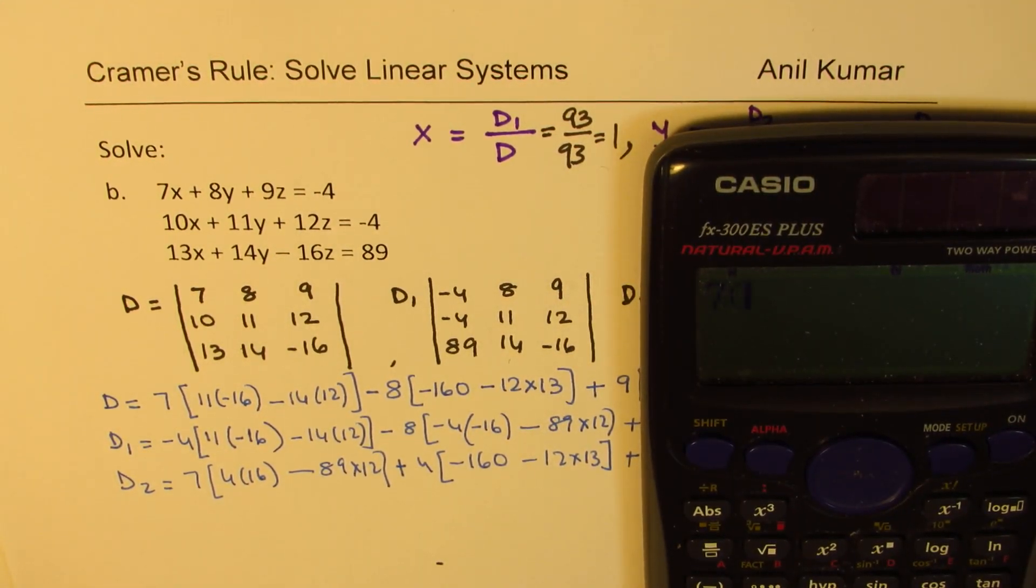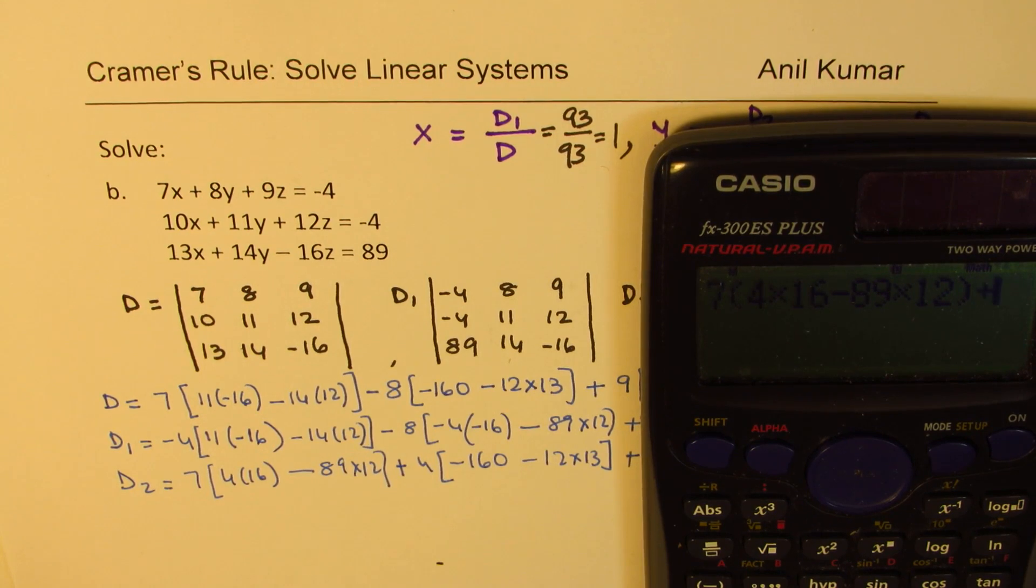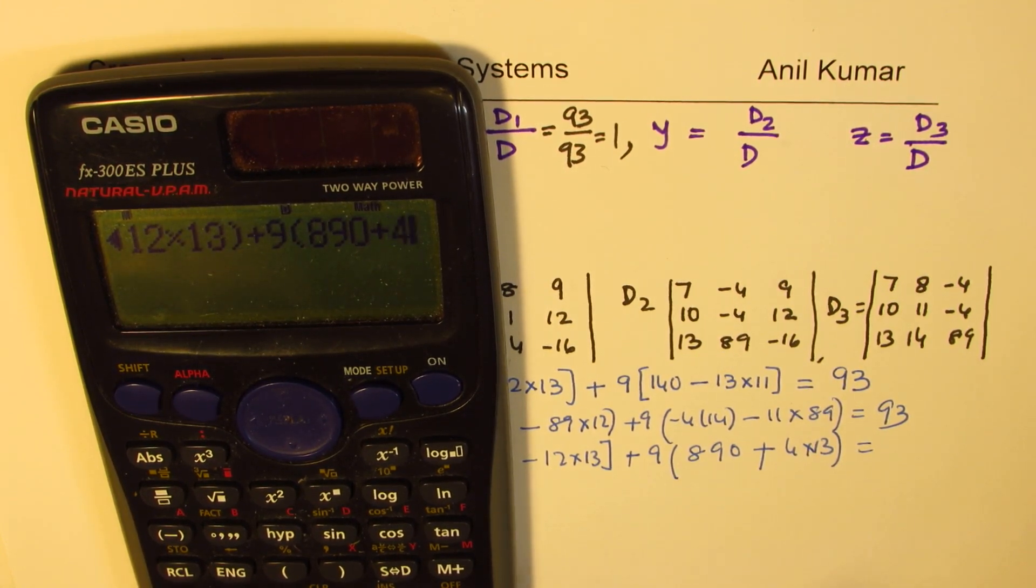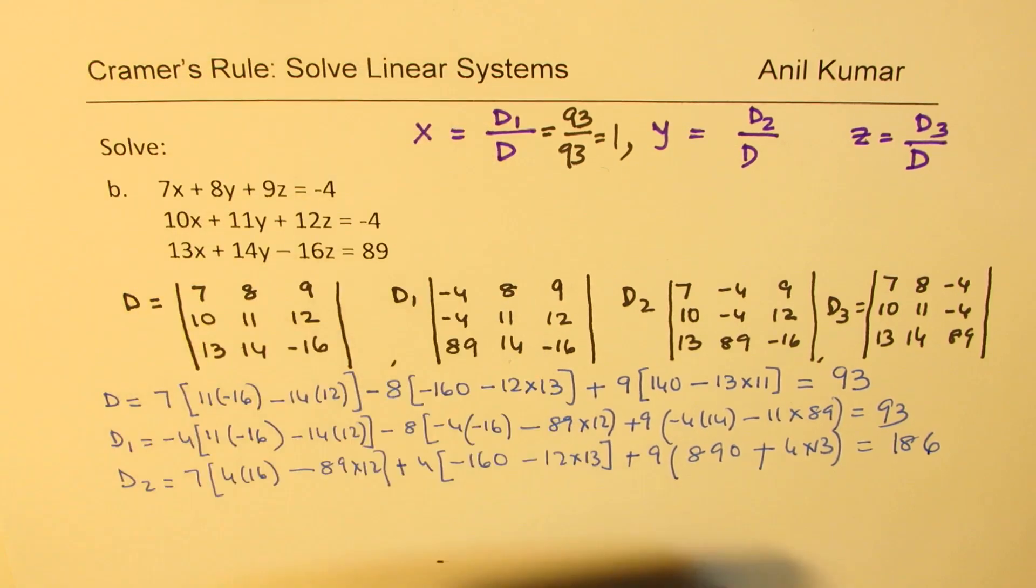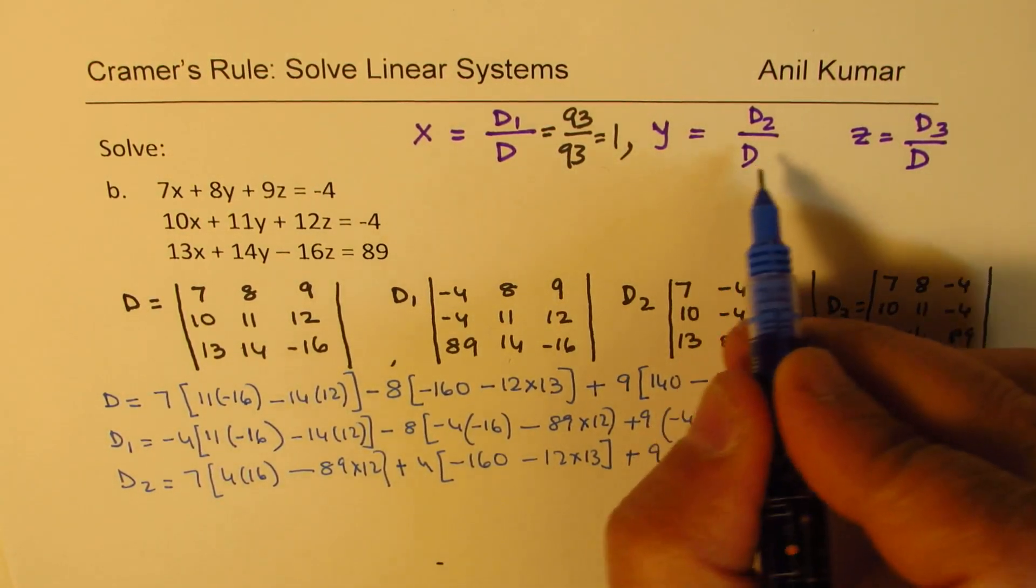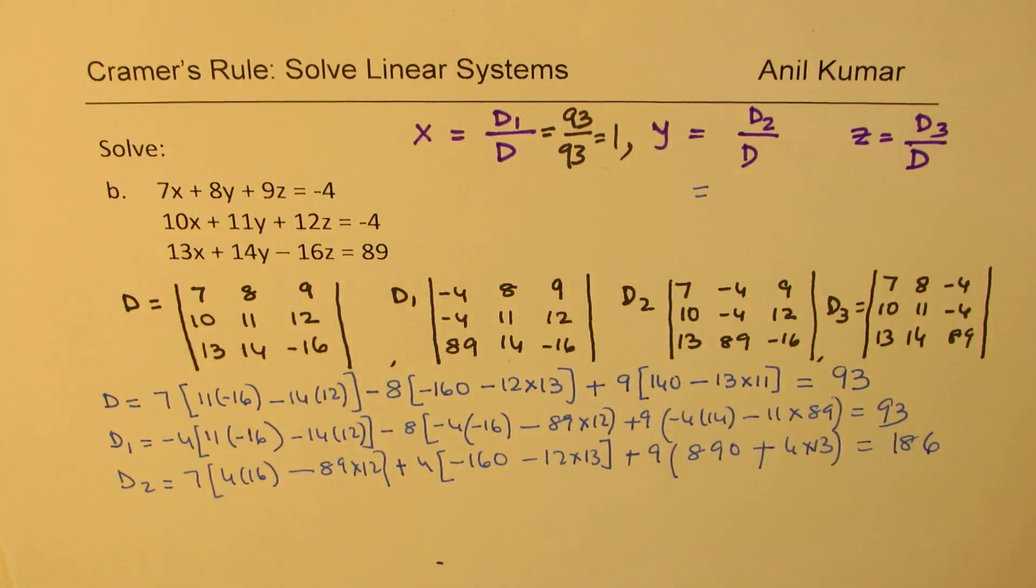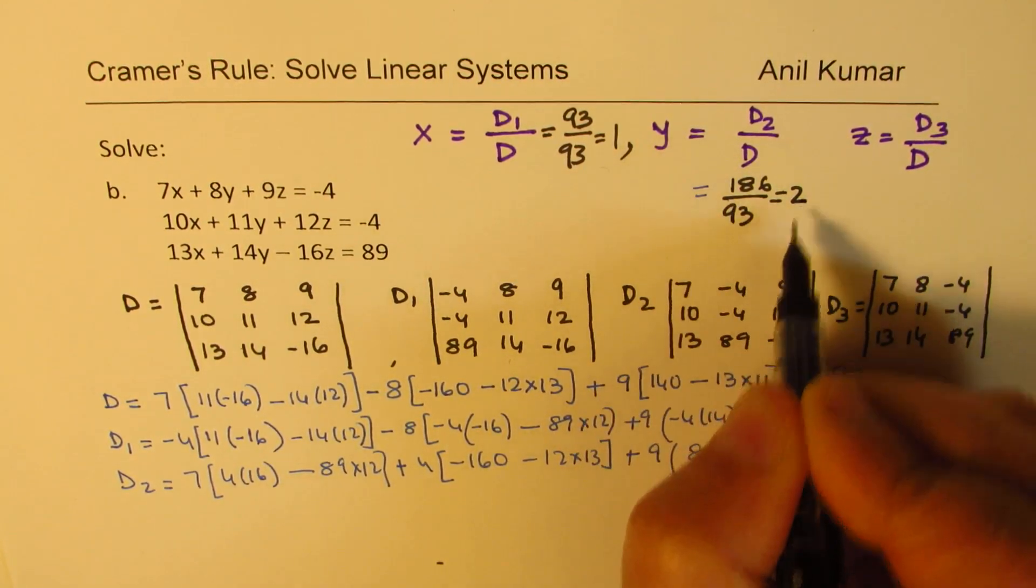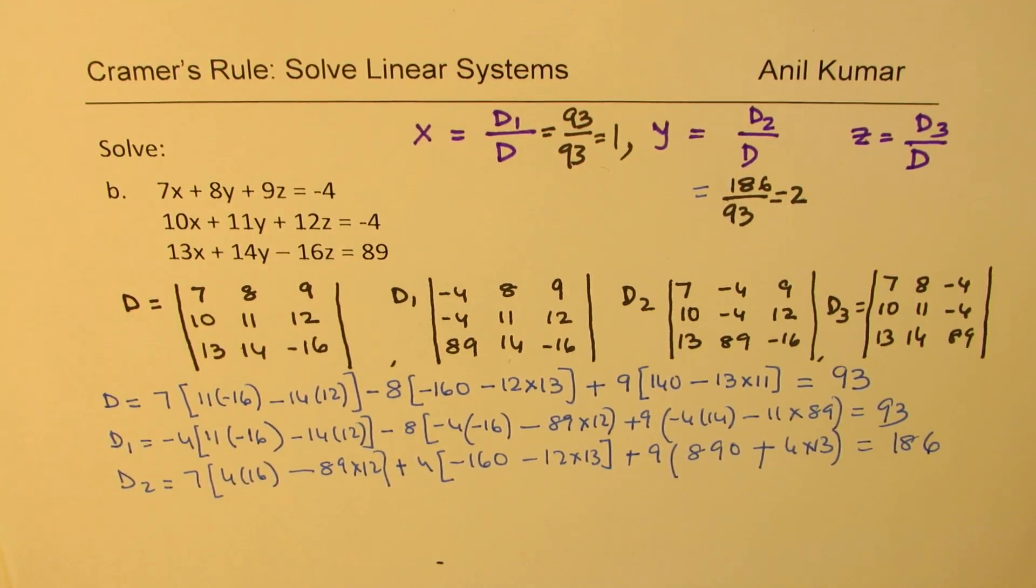So, we have 7, within brackets, 4 times 16, minus 89, times 12, bracket close, plus 4, within brackets. We have -160, minus 12 times 13, bracket close. And then, we have plus 9, within brackets. It is 890 plus 4 times 13. A lot of brackets involved. Well, we get one answer, which is 186. So, if I substitute 186 here for Y, what do we get? Let me do it here. So, we'll write this as 186 divided by 93. And that goes 2 times. So, the value of Y is 2. Do you get it right? So, that is how you kind of calculate.